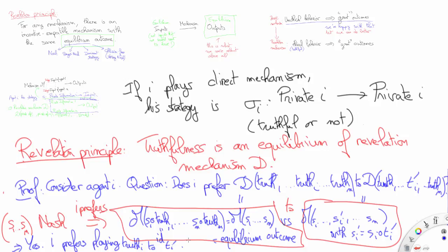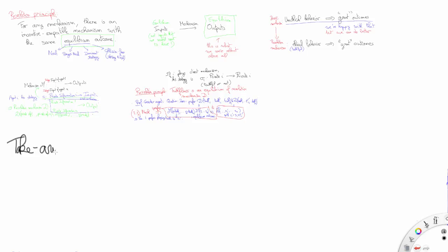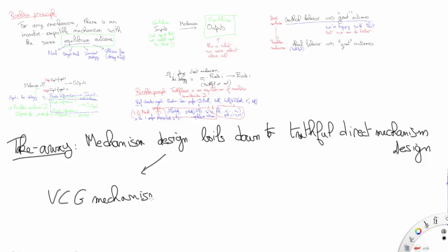I'll let you prove as an exercise that the revelation principle holds as well for all the equilibrium concepts introduced in this video. The takeaway message of the revelation principle is that almost without loss of generality, mechanism design can be restricted to the analysis of direct mechanisms — that is, mechanisms whose input spaces are the agents' private information — for which truthfulness satisfies some equilibrium concept. This idea has been instrumental in the development of clever mechanisms, like the VCG mechanism or Myerson's auction, as we shall see in future videos.